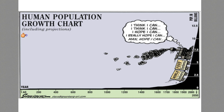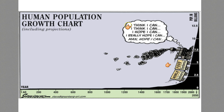This is what we call a political cartoon. It has a scale of years at the bottom, from 1 AD all the way to 2050. There's a train on here labeled 'World Delivery Food System,' and the train says 'I think I can, I think I can, I hope I can, I really hope I can.' Over here, there's an increase going up — this is the population of the world.